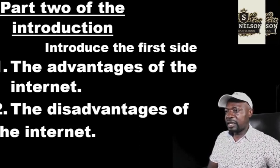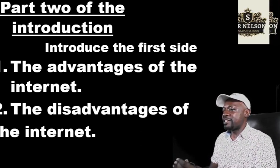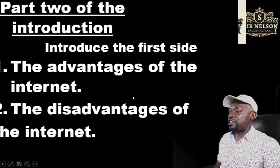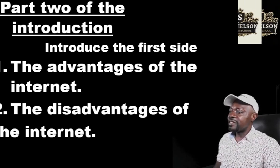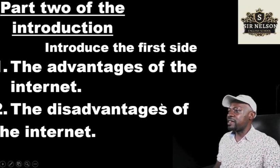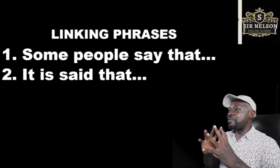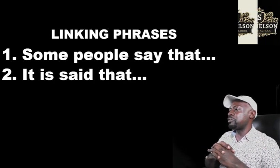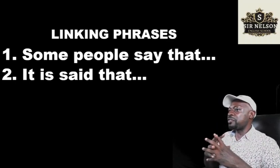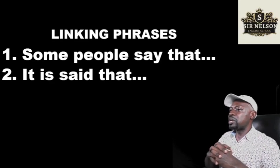Introduction. Introduce the first side: the advantages of the internet and the disadvantages of the internet. Our topic has two sides — the first side is the side of the advantages, the second side is the side of disadvantages. To introduce the first side, you will need some kind of a linking phrase. These two linking phrases are very important. English is the language of linking phrases — you need ideas, but you have to connect them. The linking phrases help you link your ideas. Number one: some people say that. Number two: it is said that.